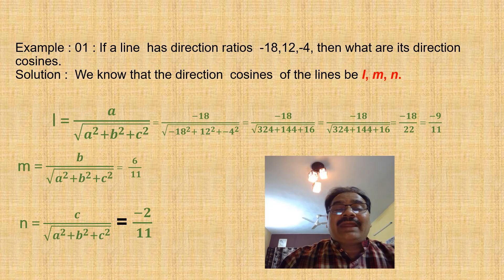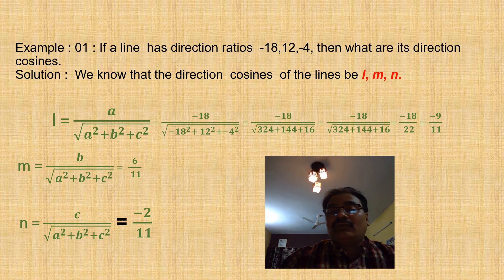In the second problem, if a line has direction ratios -18, 12, and -4, then what are its direction cosines?